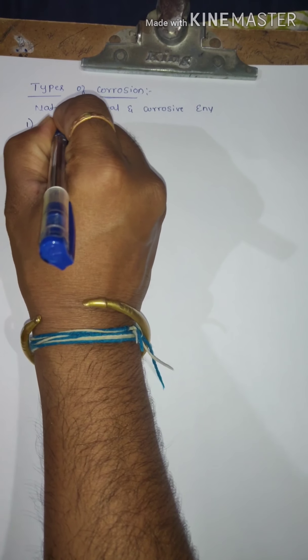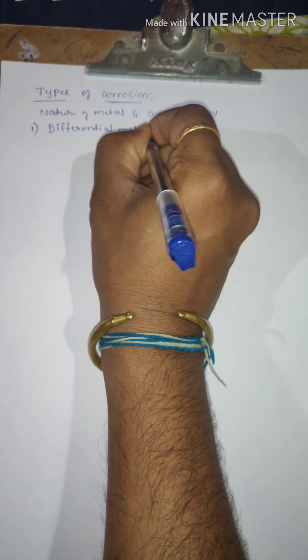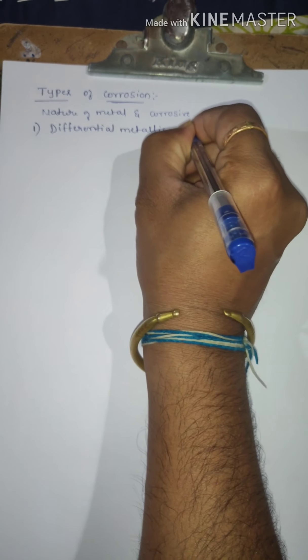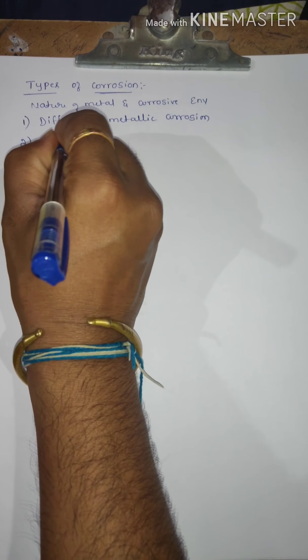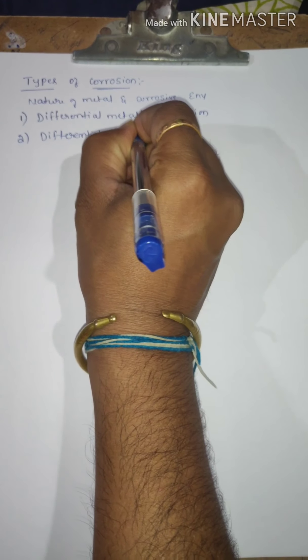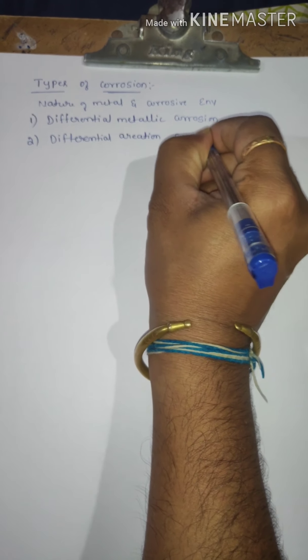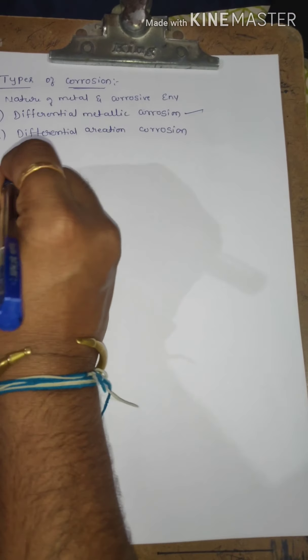One is differential metallic corrosion, and the second one is differential aeration corrosion. Now, in detail, we will understand each one by one. First, we go to differential metallic corrosion.